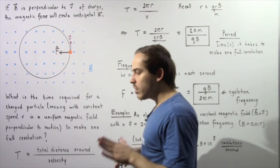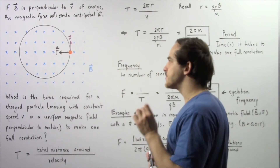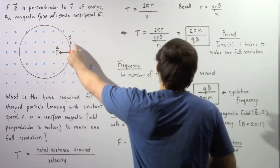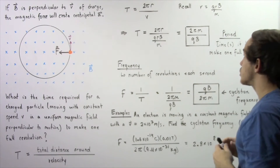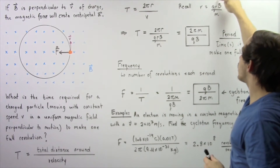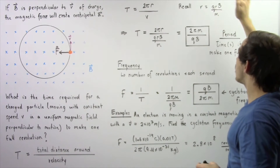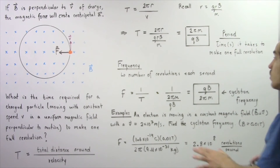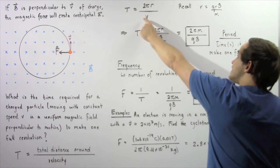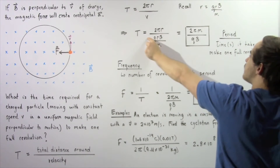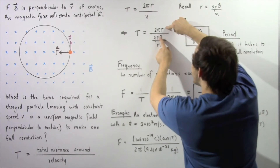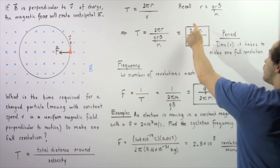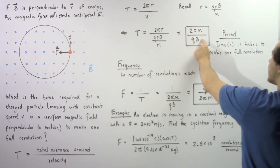In the previous lecture, we saw that the velocity of an electric charge moving in a uniform magnetic field perpendicular to the velocity is given by: velocity equals qrB divided by m, where q is the charge, r is the radius, B is the magnetic field, and m is the mass of our electric charge. We can replace the velocity with this ratio — notice the r's will cancel and m goes on top — so the period equals 2πm divided by q multiplied by B.